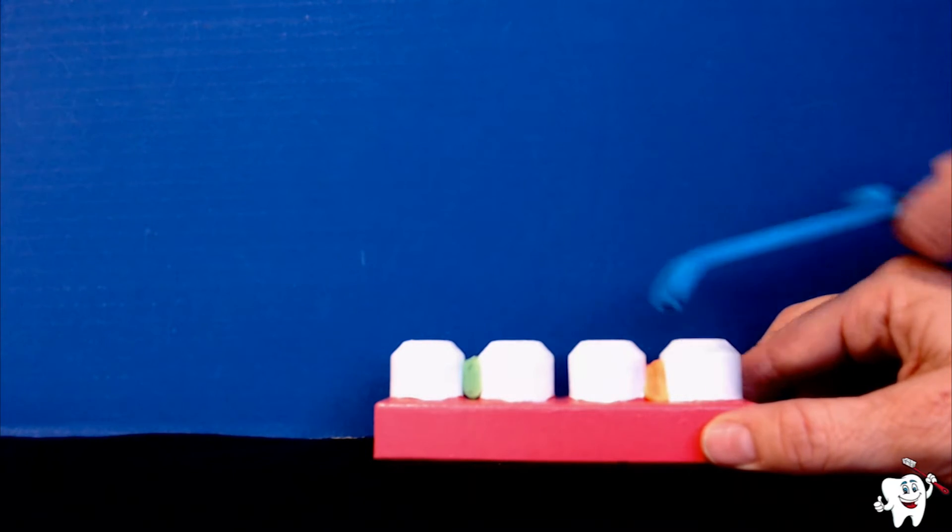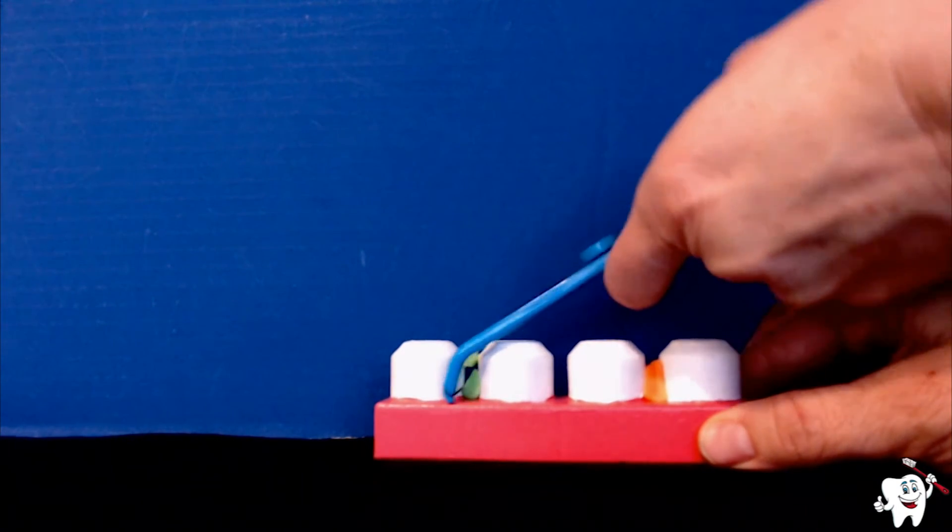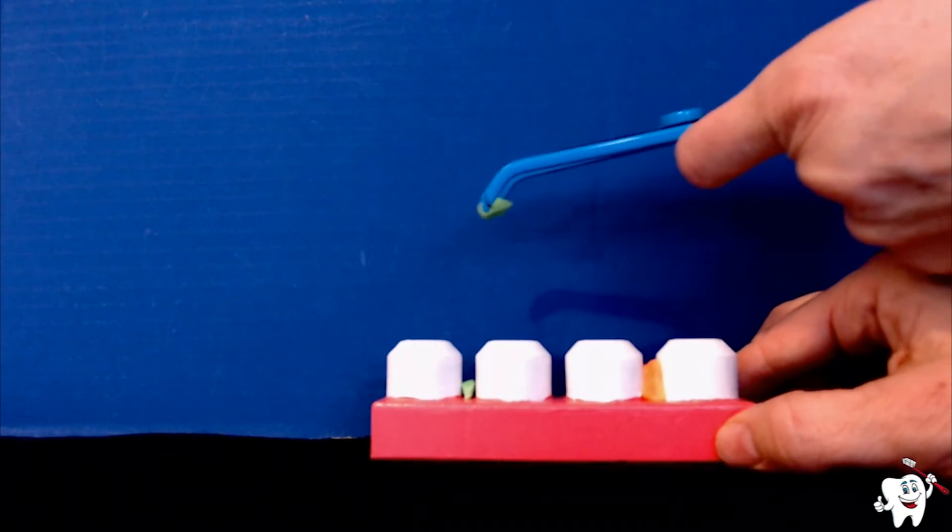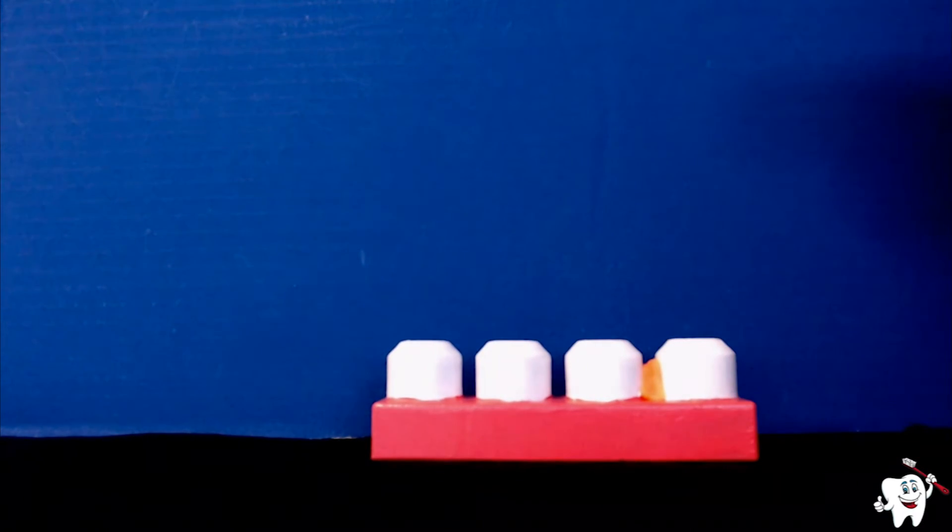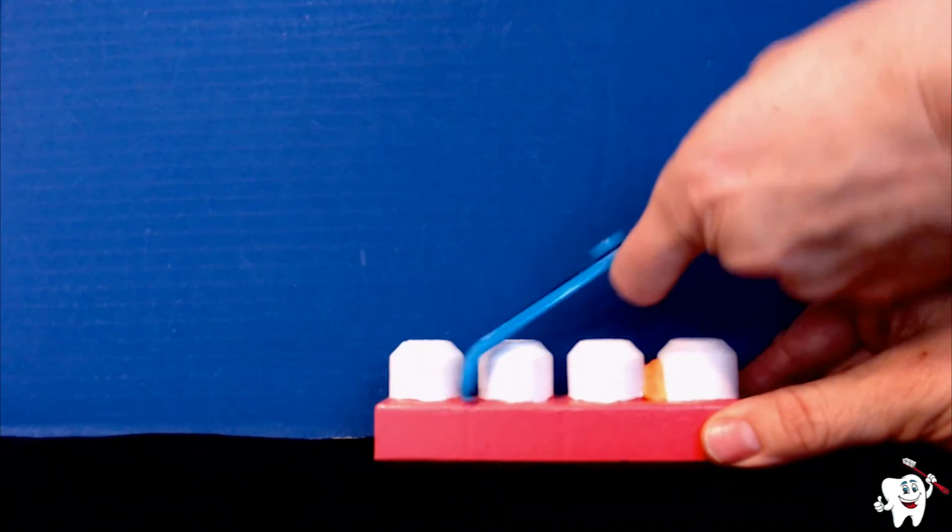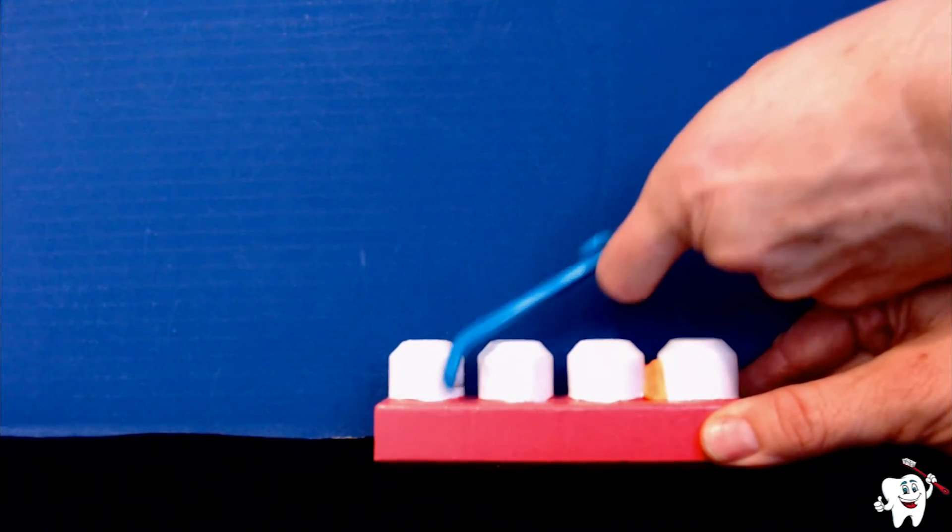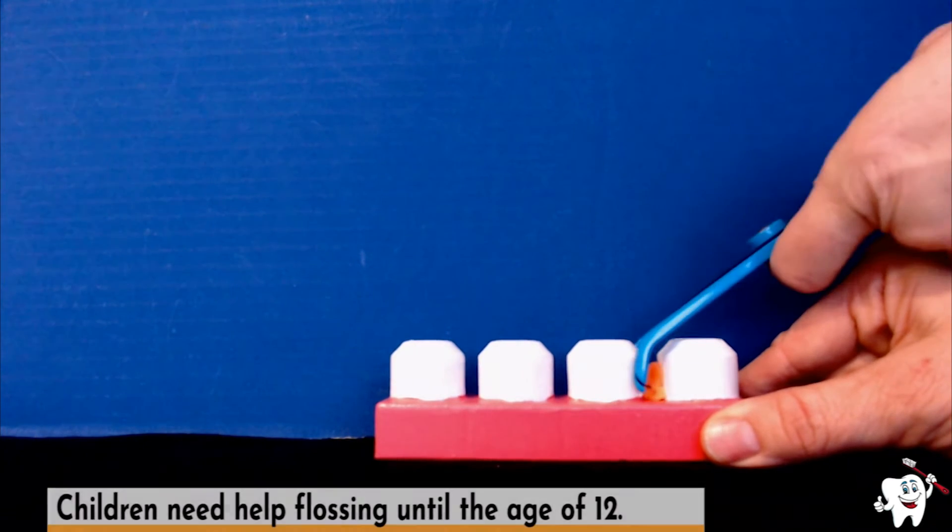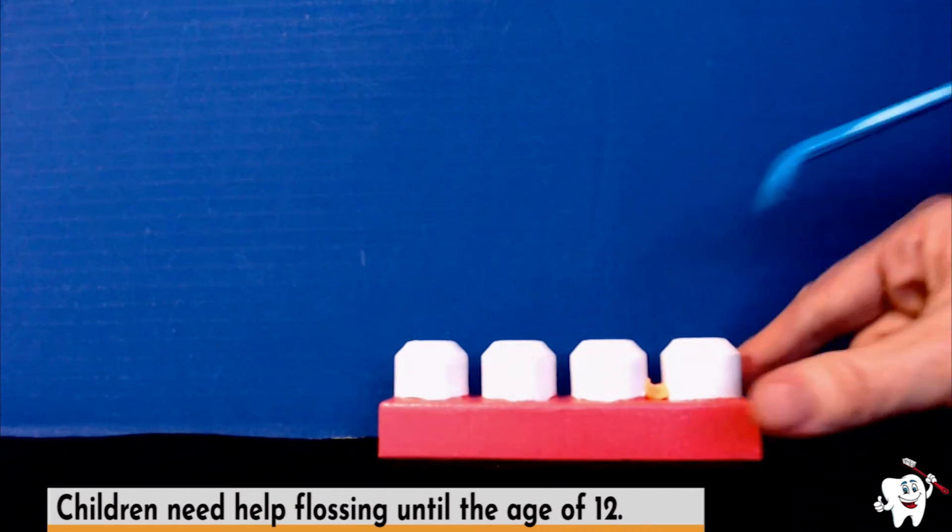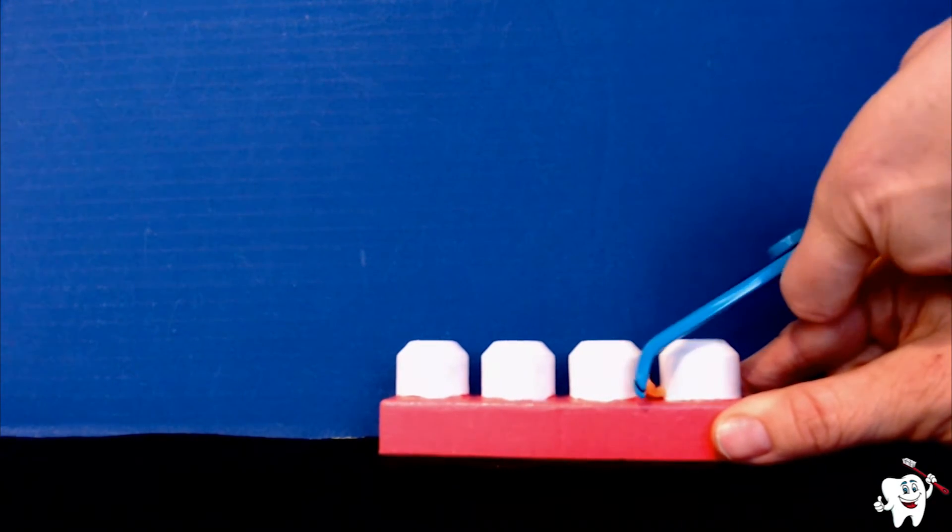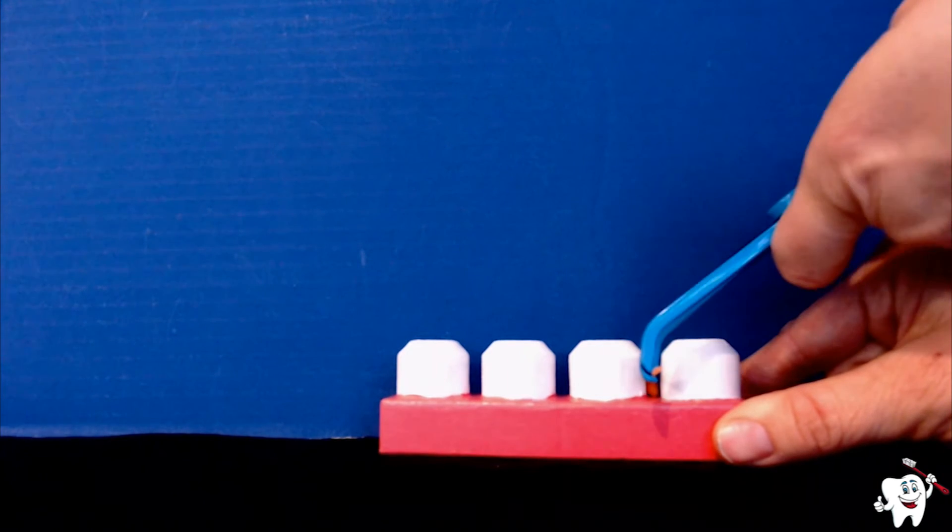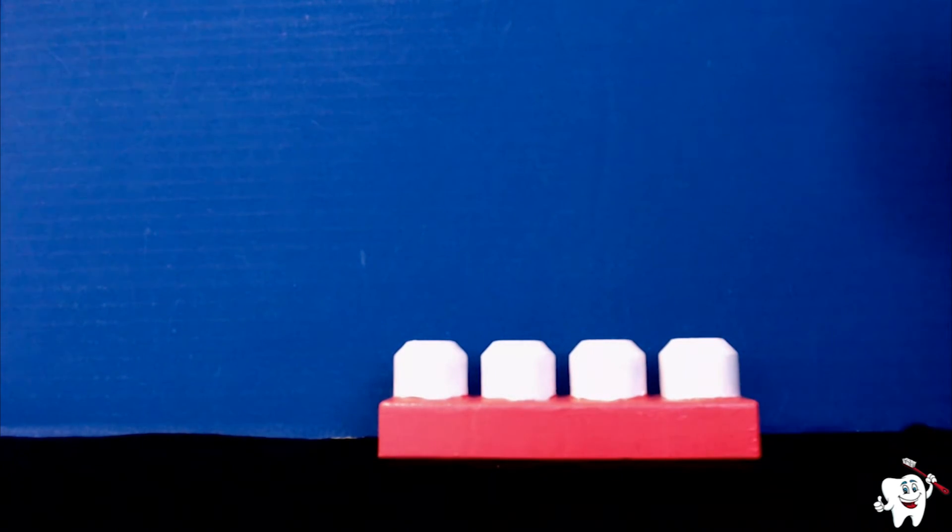Clean your flosser between each tooth so that you know you're getting food and plaque away from your teeth and you're not sticking it back in between your teeth. Clean that off and then continue flossing until it is clean in that area. You want to make sure that you are cleaning all of the food and plaque out of there, cleaning between each set of teeth. Once we have cleaned between all of our teeth, you can see that now our teeth are clean. This is why it is important to brush and floss every day.